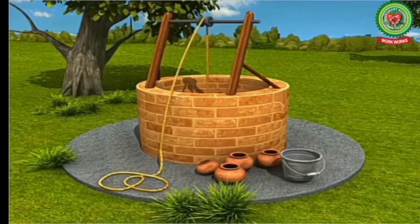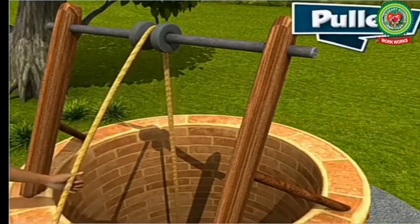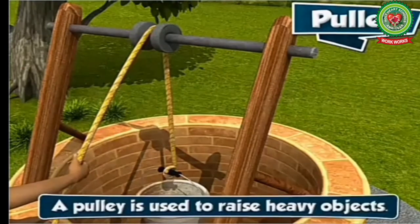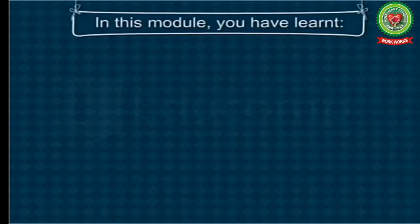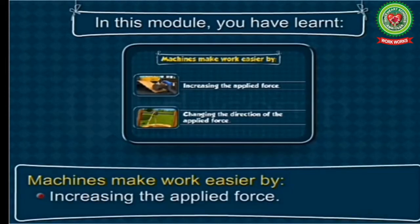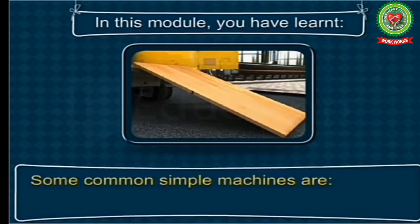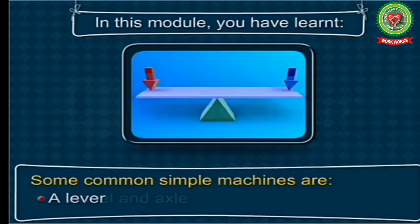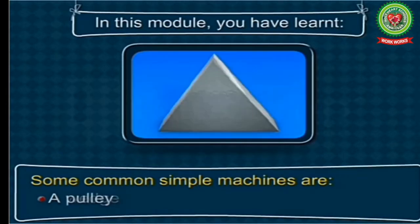A well uses a pulley arrangement to draw water, so a pulley is used to raise heavy objects with less effort. Simple machines make work easier by increasing the applied force and by changing the direction of applied force. The six common simple machines are: inclined plane, lever, wheel and axle, screw, wedge, and pulley.